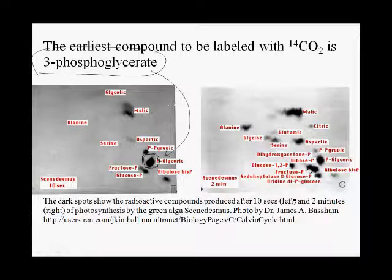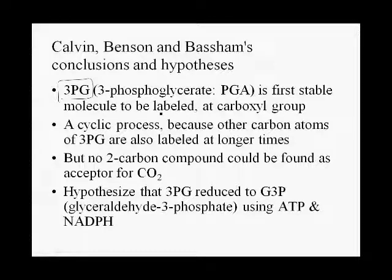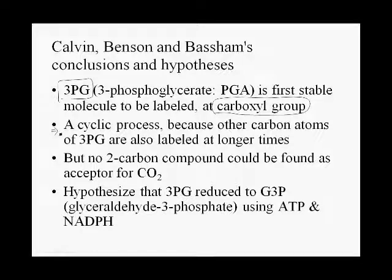At two minutes, you can again see lots of other things being labeled. Based on these results, they deduced that 3-phosphoglycerate was essentially the first stable molecule that was labeled, and it was labeled at the carboxyl group, which makes sense if you're adding radioactive carbon dioxide to an organic molecule. They further deduced it must be a cyclic process, because at longer times the other carbons of 3-phosphoglycerate became labeled.